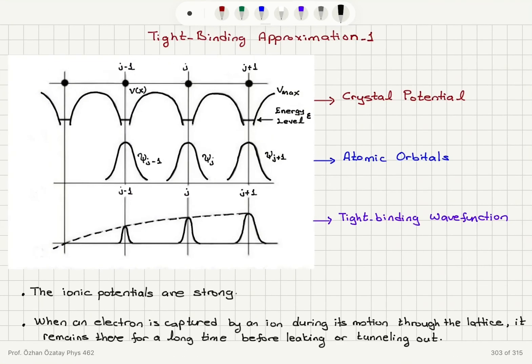so this basically sets up the tight binding approximation we have the periodic crystal potential the atomic orbitals centered around each ion and the tight binding wave function which is basically in the Bloch form